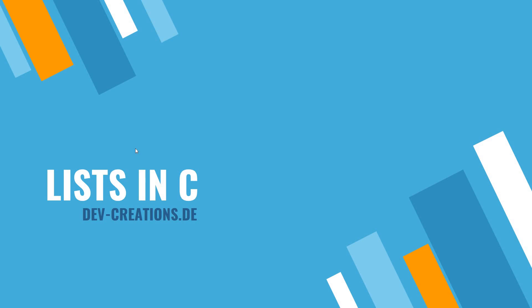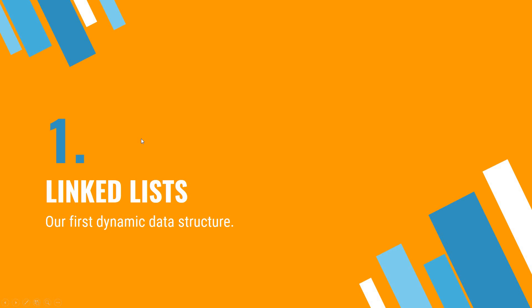First of all, we will start with linked lists. Linked lists are the simplest kind of dynamic data structure, and it's also our first dynamic data structure, which makes total sense to start with the easiest one.